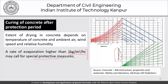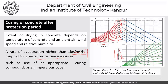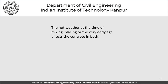Using the nomogram, we determine whether hot weather concreting precautions are needed. Such precautions include use of an appropriate curing compound or impervious covers. The curing compound seals the pores of the concrete and lowers the evaporation rate. Hot weather affects concrete in both the fresh and hardened states.